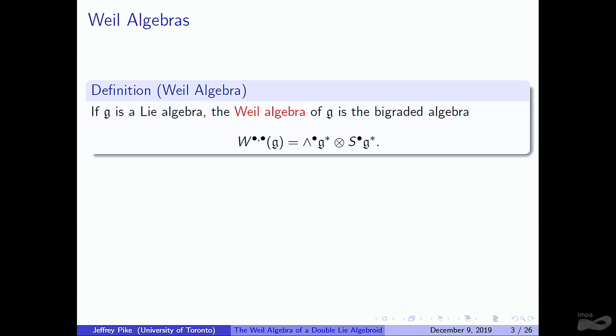Let me remind you of the Weil algebra for a regular Lie algebra. So we have a Lie algebra G. The Weil algebra is given by a graded tensor product of the symmetric powers and the antisymmetric powers. One way to think about this would be forms, or maybe polynomials with values in the exterior algebra. This comes with Cartan calculus. Even in the case of a vector space, this will have a differential given by the usual Koszul formula. And when you have a Lie algebra, you get another differential coming from the Chevalley-Eilenberg differential, where we look at the coadjoint action extended to the symmetric powers.